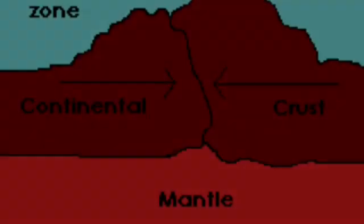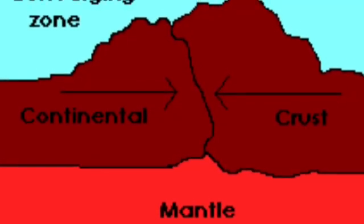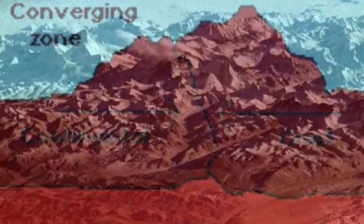Two huge masses of continental lithosphere meet head-on. Neither one can sink because both plates are too buoyant.